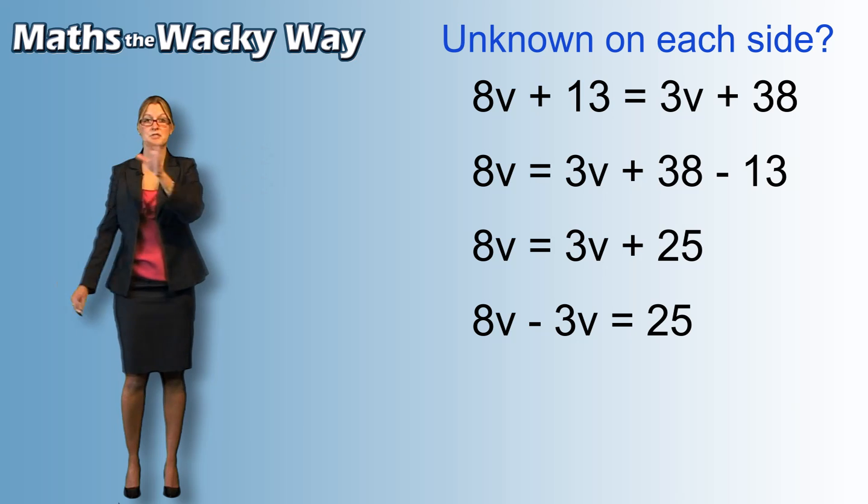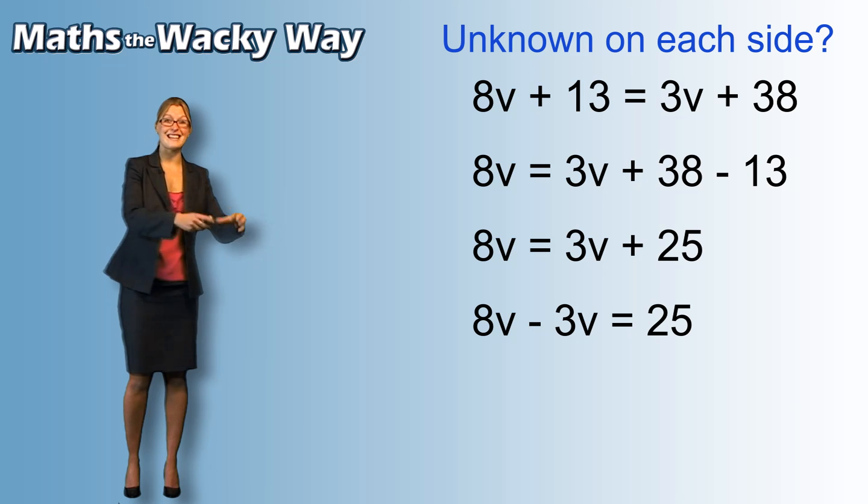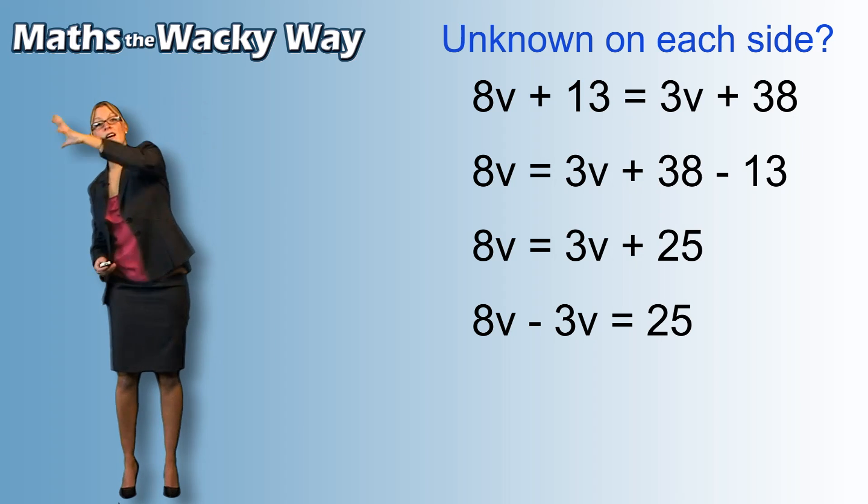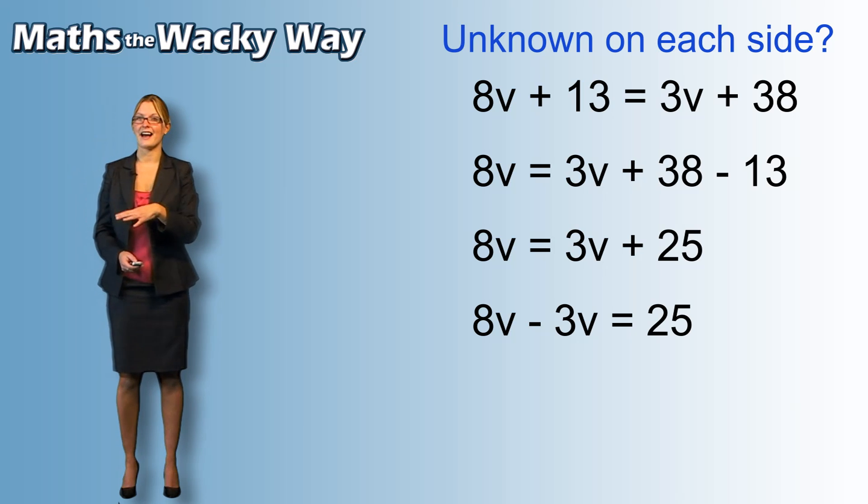Now, it's going to cross the equal sign. So, there's going to be a high five and what we need to appreciate is that the 3v is actually adding on this side. It's going to come over and it's going to become a subtract.